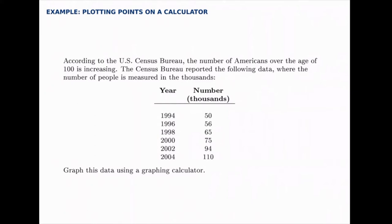So the question reads, according to the US Census Bureau, the number of Americans over the age of 100 is increasing. The Census Bureau reported the following data where the number of people is measured in the thousands. We have data from 1994 to 2004 every other year, and it goes from 50,000 up to 110,000. We're going to use a graphing calculator to graph this data.